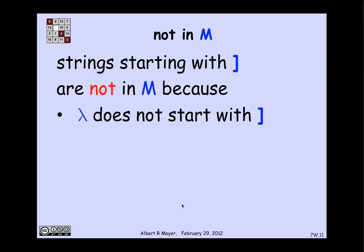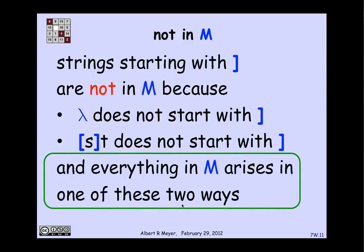The base case doesn't have any brackets at all, so it certainly doesn't start with a right bracket. And looking at the constructor rule, all the strings that you can construct start with a left bracket. And so we're really appealing to the implicit that's all clause, the extremal clause, that says that since the only way to get things in M is by applying the constructor, you're not going to be able to get anything that starts with a right bracket.